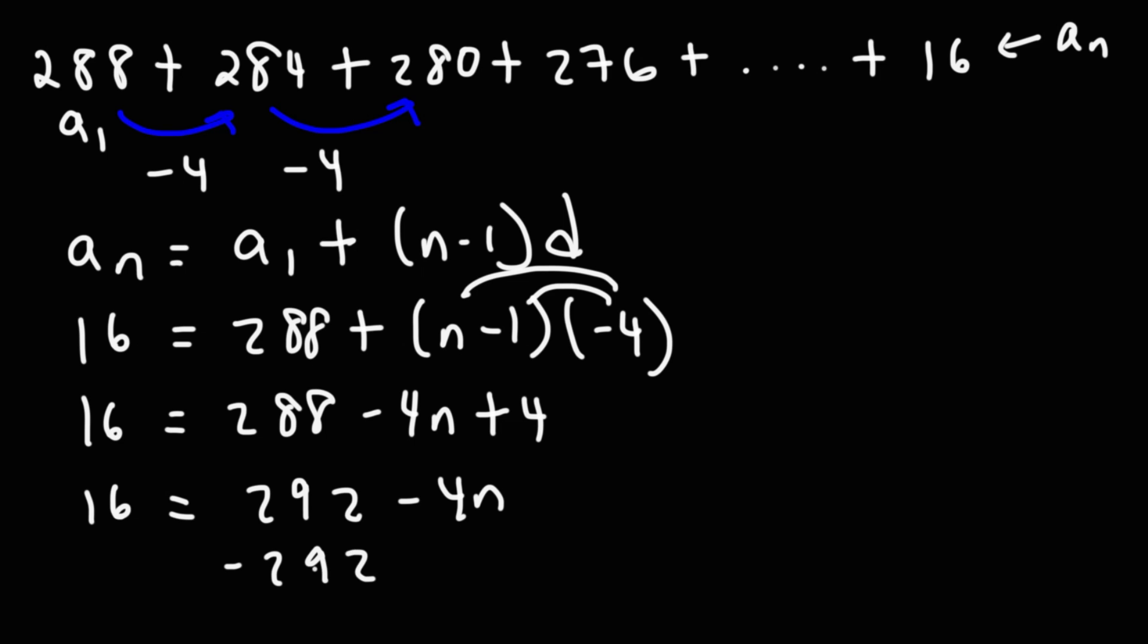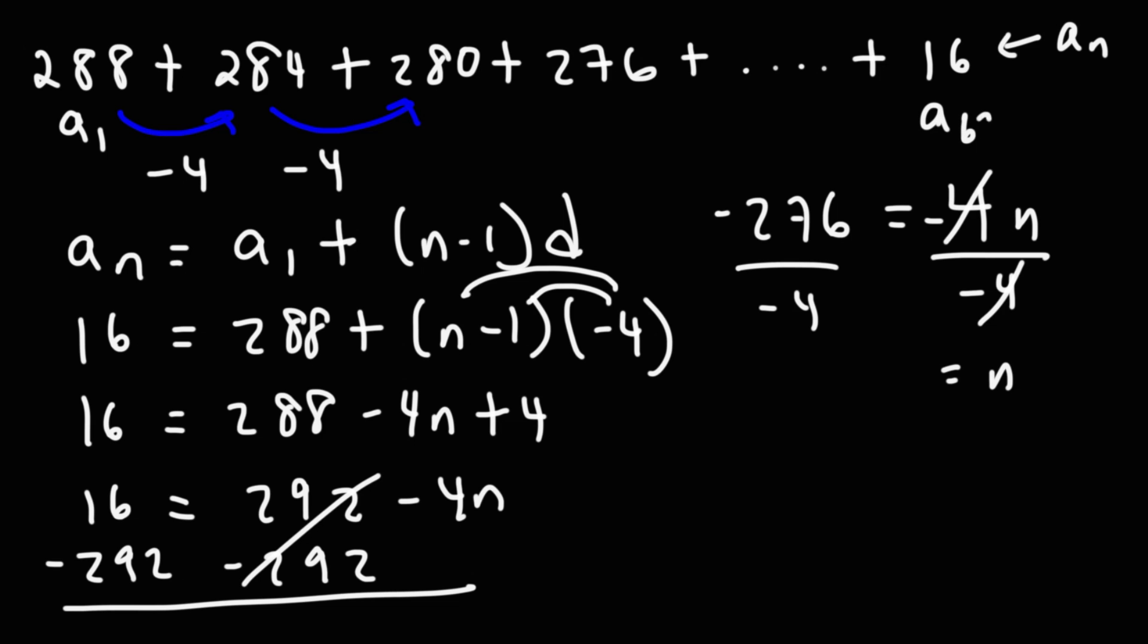Next, I'm going to subtract both sides by 292. 16 minus 292 is negative 276. And that's equal to negative 4n. So dividing both sides by negative 4 will give us the value of n. And n is 69. So this is the 69th term.